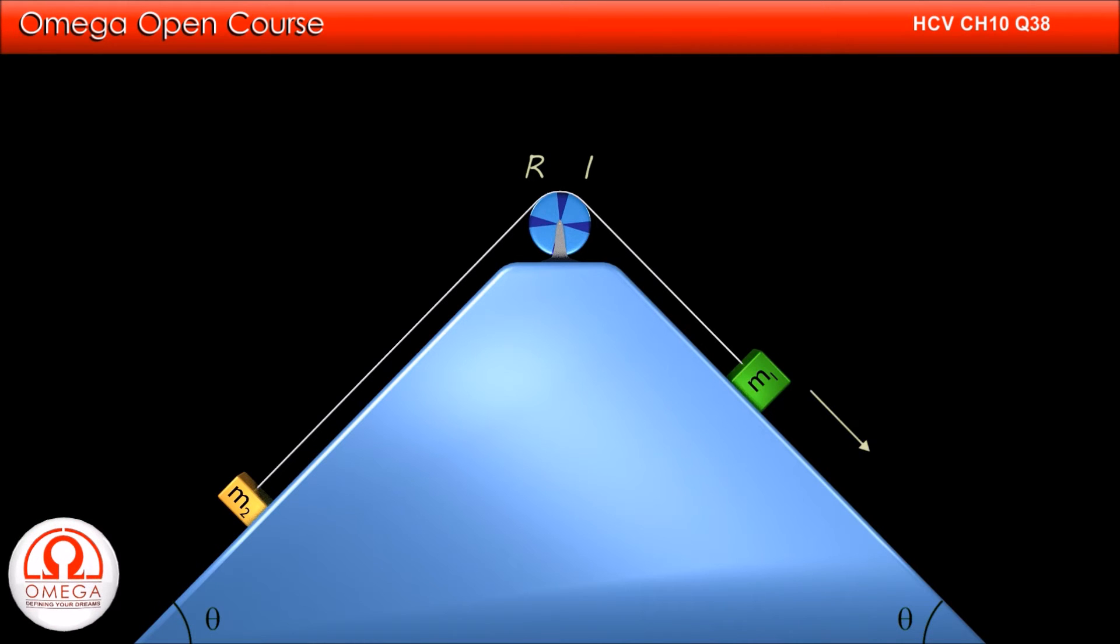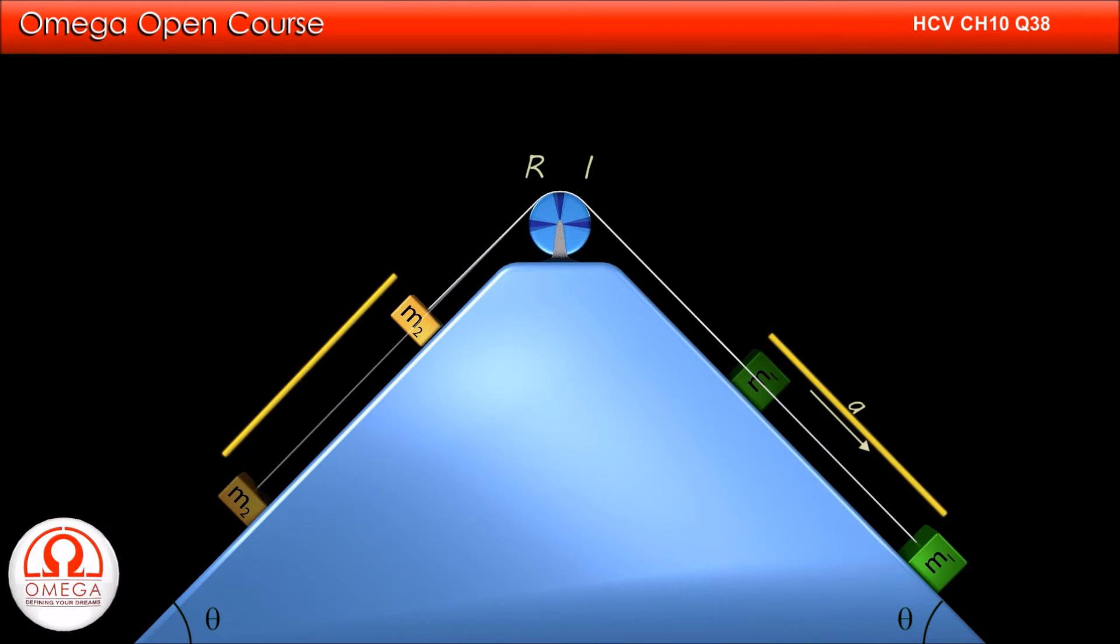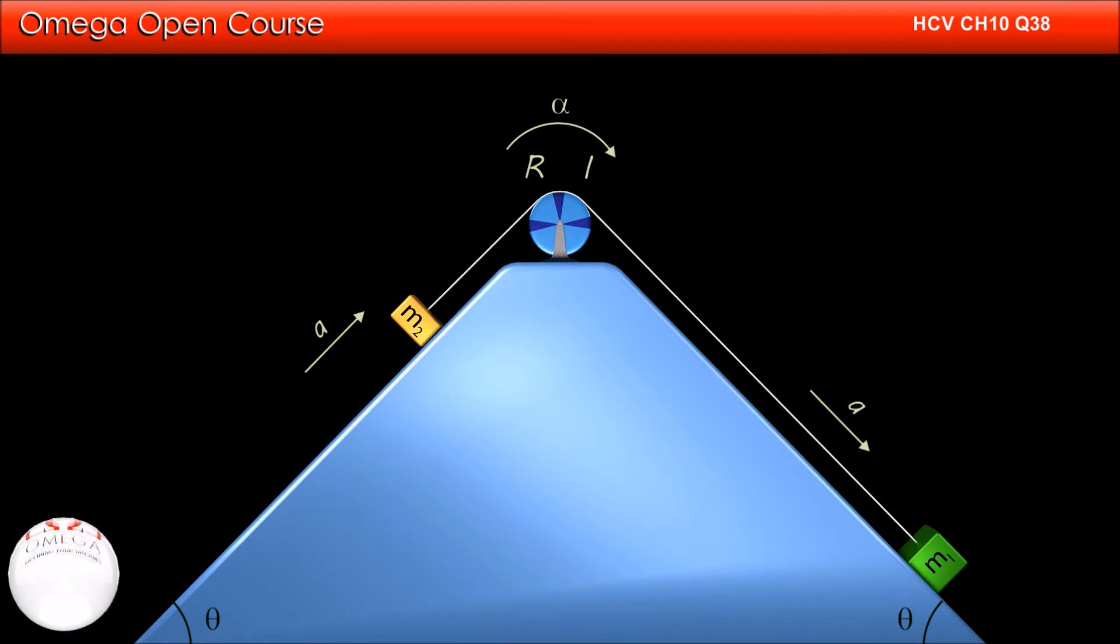Let the acceleration of the 4 kg block be A. Since the 2 kg block is connected to the 4 kg block directly through the string, the 2 kg block will move exactly as much as the 4 kg block moves. Thus acceleration of the 2 kg block is also A. Also, if the angular acceleration of the pulley be alpha, then A must be equal to alpha R.